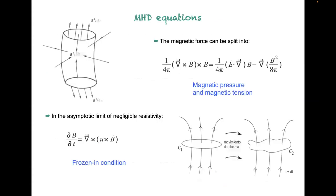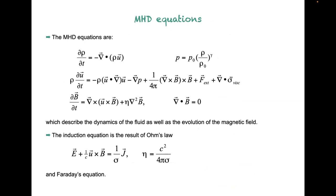If at time equals zero B is exactly zero, then the right-hand side is zero, and the time derivative of B is also zero — so MHD won't generate a magnetic field for you from nothing. But if you assume there is a small seed field — a fluctuation that someone put there — MHD can enhance this magnetic field. That is what I will show as an example.